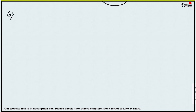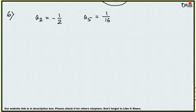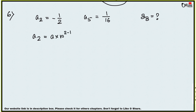Sum number 6: the second and fifth terms of a geometric series are given as a2 = −1/2 and a5 = 1/16 respectively. Find the sum of the series up to 8 terms, i.e., find S8. Using the formula aₙ = a·rⁿ⁻¹: a2 = a·r = −1/2 and a5 = a·r⁴ = 1/16.